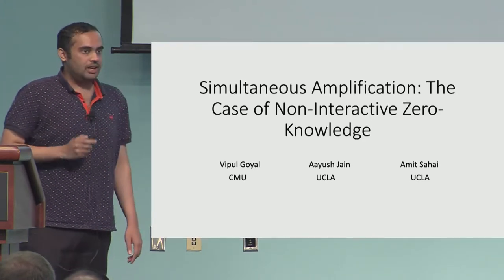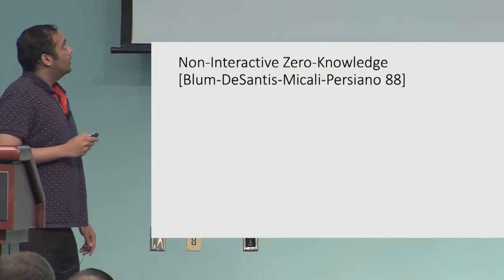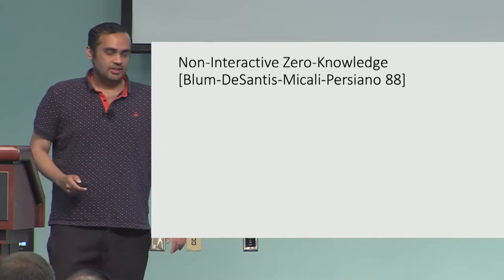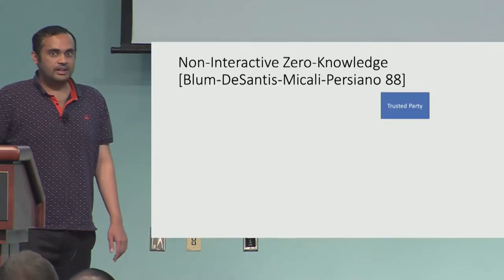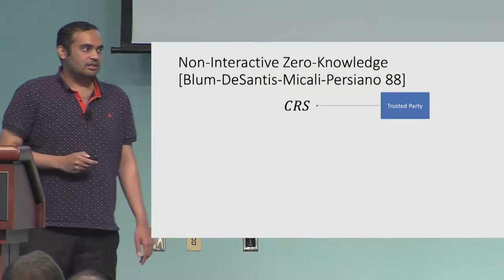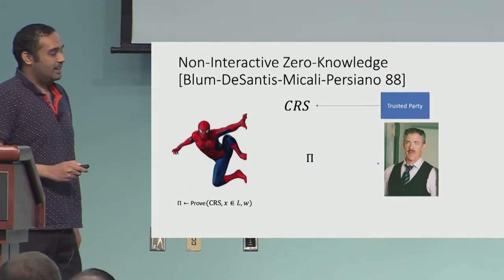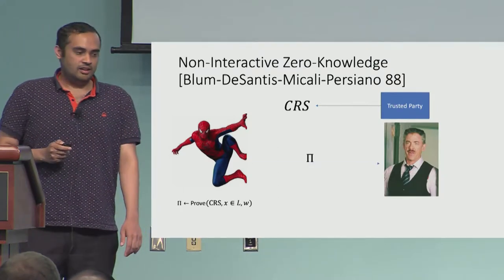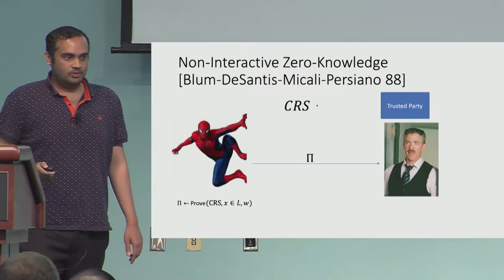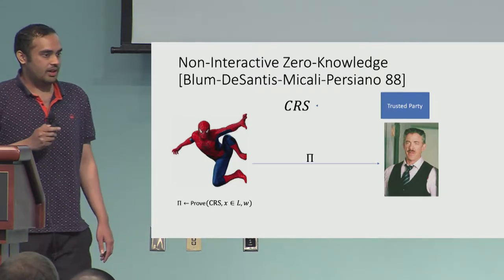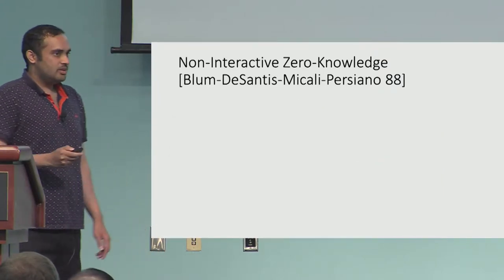Let me define the problem formally. In a non-interactive zero knowledge argument system, there is a trusted party which outputs a common reference string. Then any prover can take an instance and a witness for that instance, along with the random string, and output a proof to convince a verifier. It has two security notions associated with it.